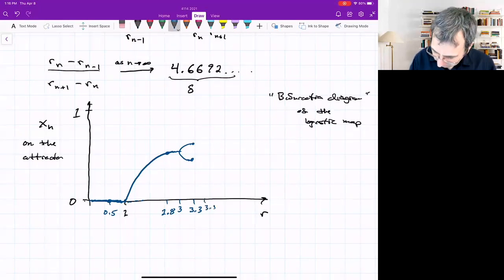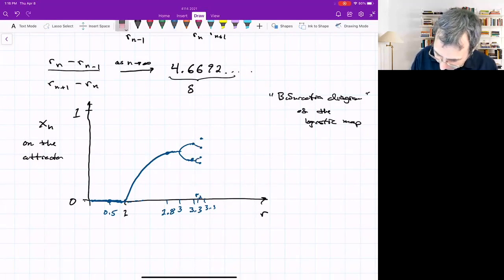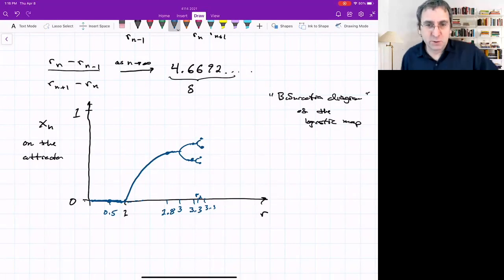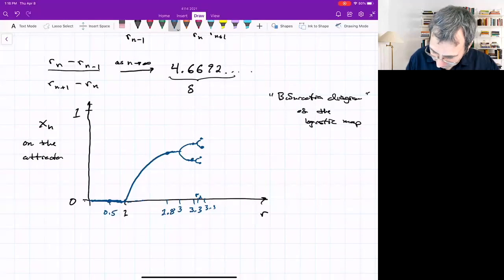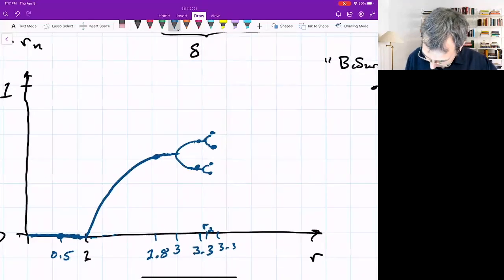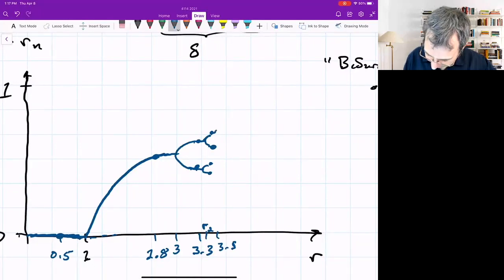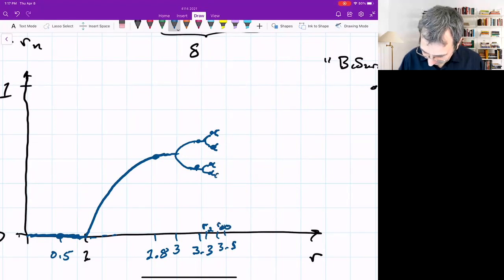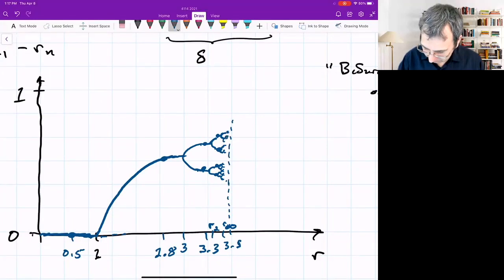At 3.5, we had four points because somewhere in there was R_2, and there's a splitting again. We call this period doubling. This period doubling keeps happening at each of those values of R_n. It looks like a tree with branches. Eventually, there's R_infinity. You hit R_infinity, and all these branchings just go into a mess of chaos.